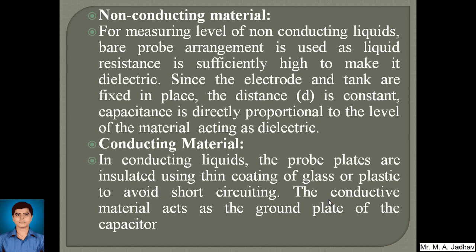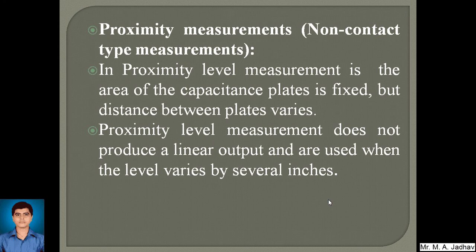For conducting materials, the probe plates are insulated using a thin coating of glass or plastic to avoid short-circuiting. The conductive material acts as the ground plate of the capacitor. For non-contact type, that is proximity measurements, the area of the capacitance plates is fixed but the distance between plates varies. The proximity level measurement does not produce a linear output when the level varies by several inches.